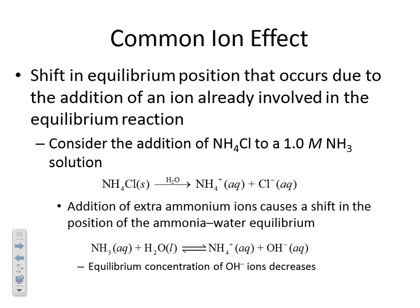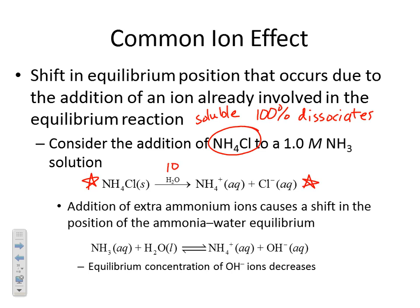Consider the addition of ammonium chloride to a one molar ammonia solution. Ammonium chloride, NH4Cl, is soluble, so it 100% dissociates. When you put ammonium chloride in an aqueous solution, that process happens 100%, which means you don't really have NH4Cl anymore. What you really have is a whole bunch of NH4+ and Cl- ions. Ammonium chloride is a soluble salt — it 100% dissociates into its ions, so you have a lot of ammonium and chloride in solution.